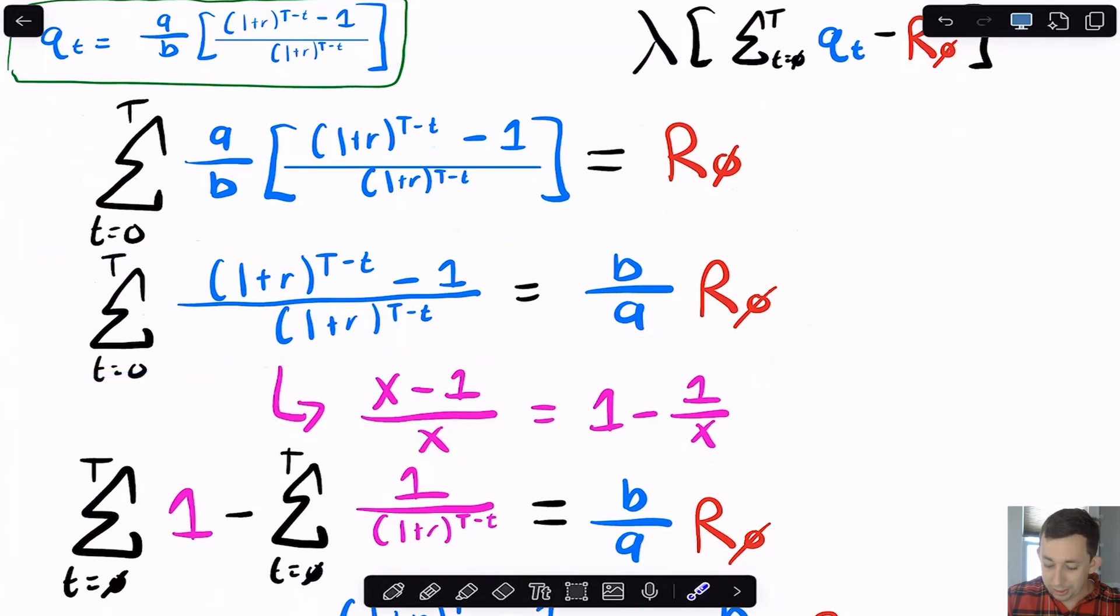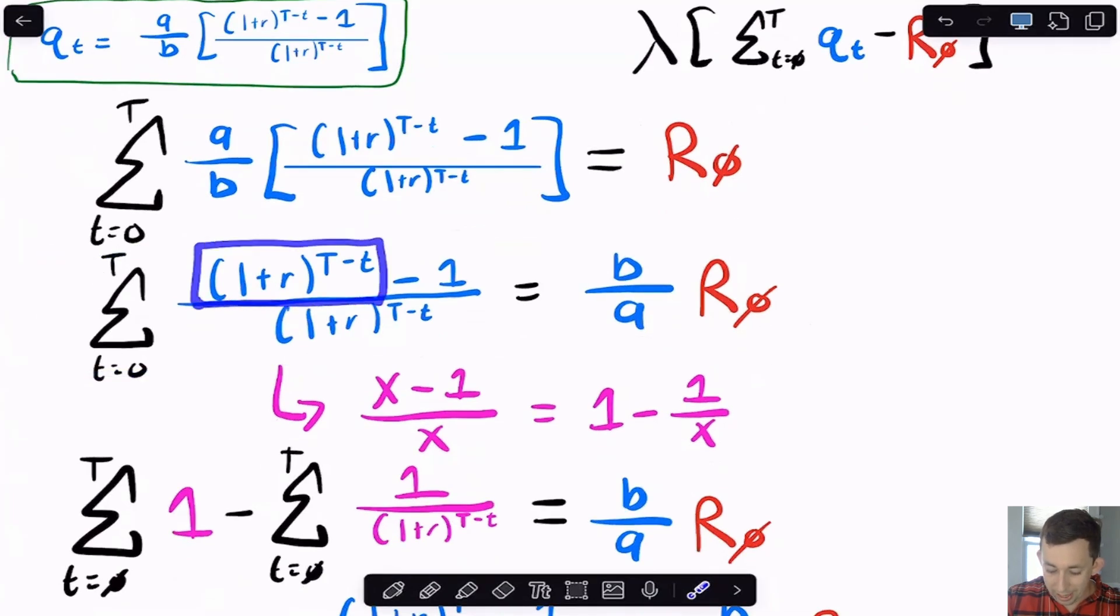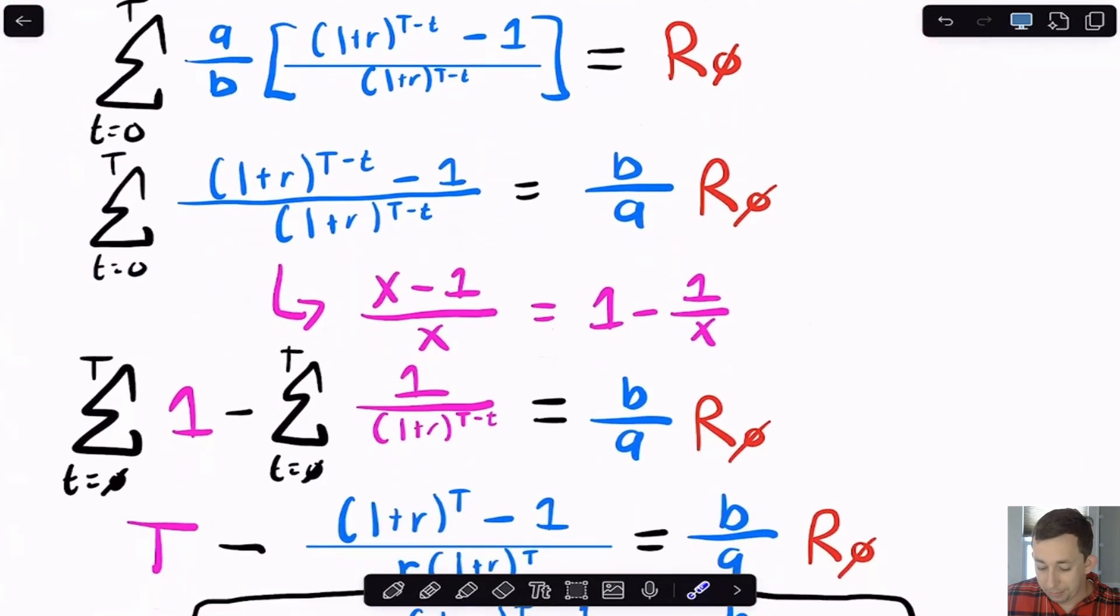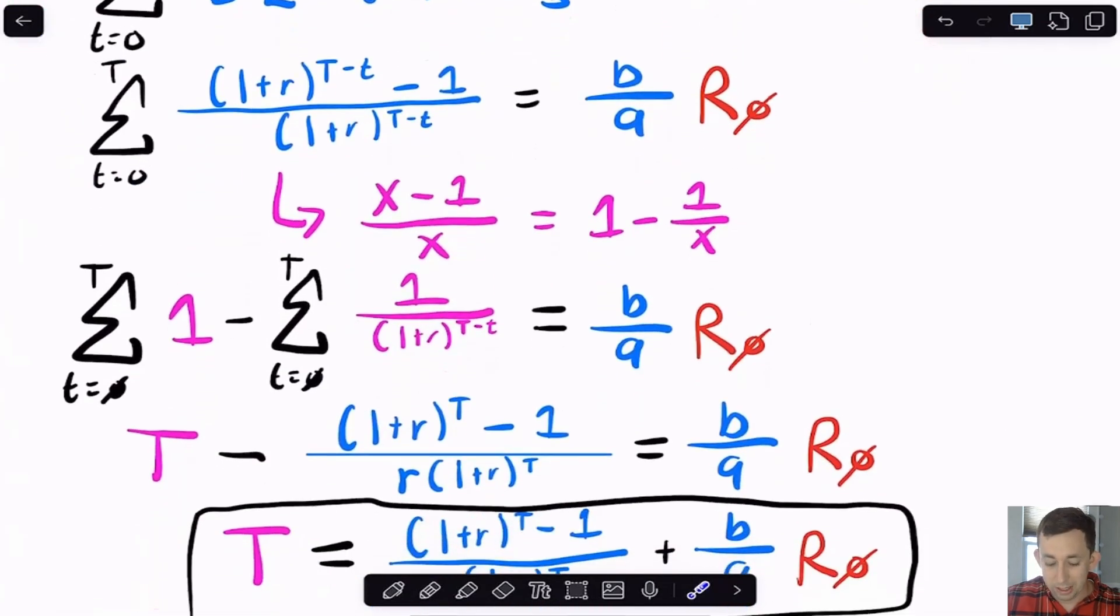Well, I know that this guy right here, if I think about one plus R to the cap T minus T as sort of an X, I know that X minus one over X is just one minus one over X, just some algebra. And so I'm going to break up this sum into the sum from T equals zero to cap T of one minus T equals zero to T of this guy right here.